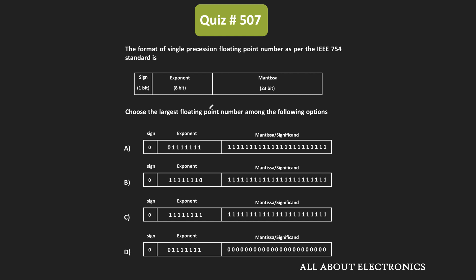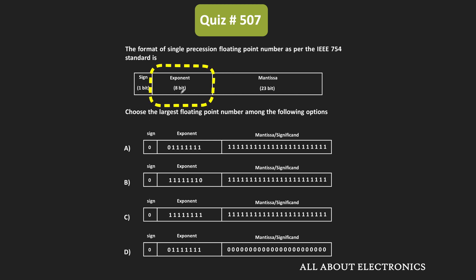In this single precision format, as per the IEEE standard, it is represented in 32 bits. Out of the 32 bits, 1 bit is reserved for the sign bit, while the next 8 bits are reserved for the exponent, and the remaining 23 bits represent the mantissa part. This exponent part is also a biased exponent, meaning a bias of +127 is added to the actual exponent value before it is represented.